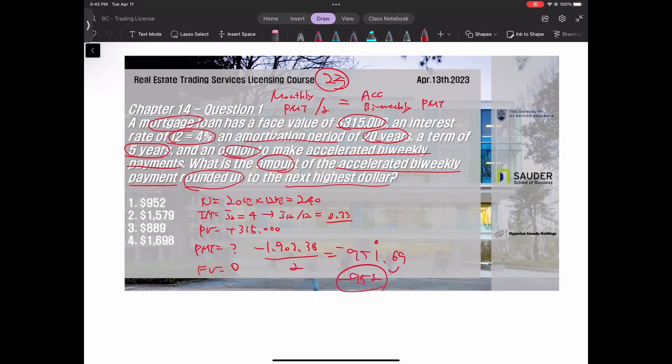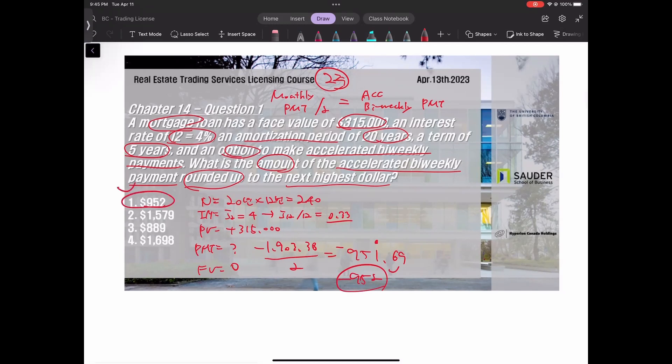The question asks to round up to the next highest dollar. Rounding up gives us $952. The answer is $952. Have a great day!